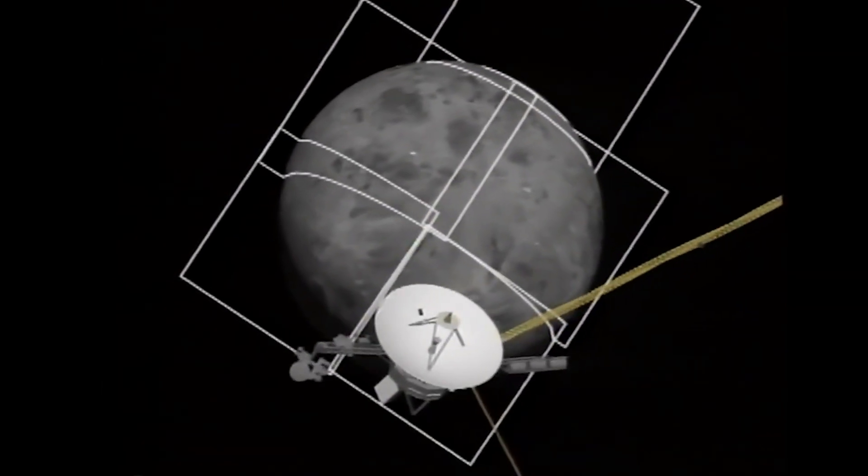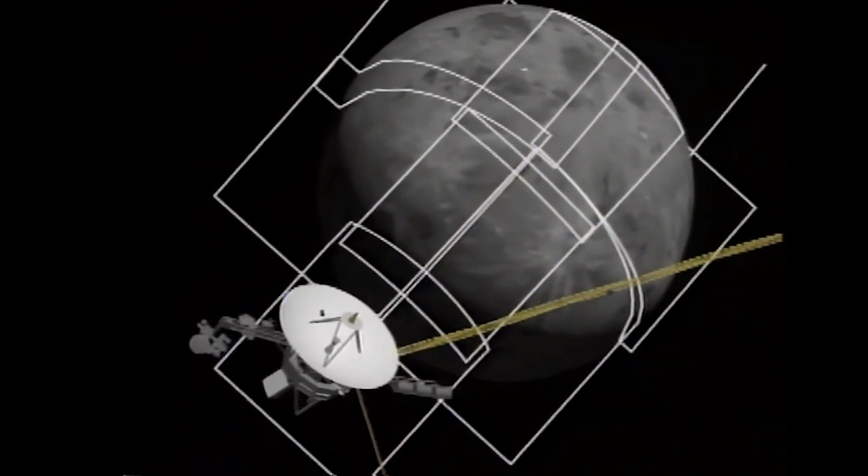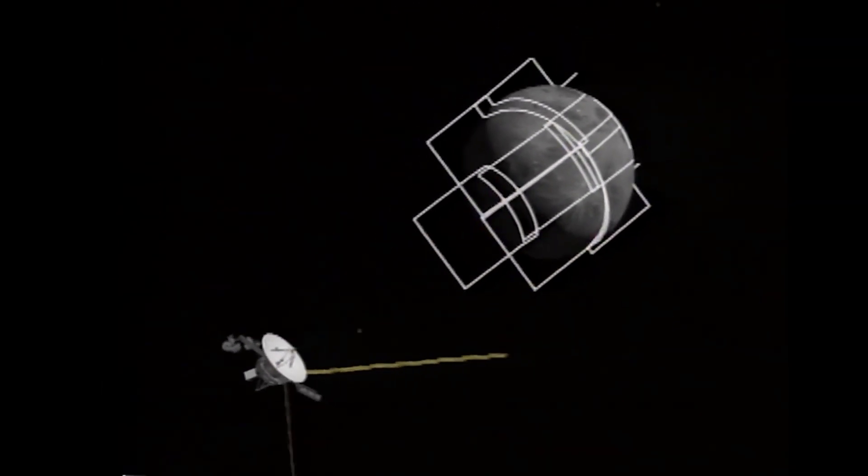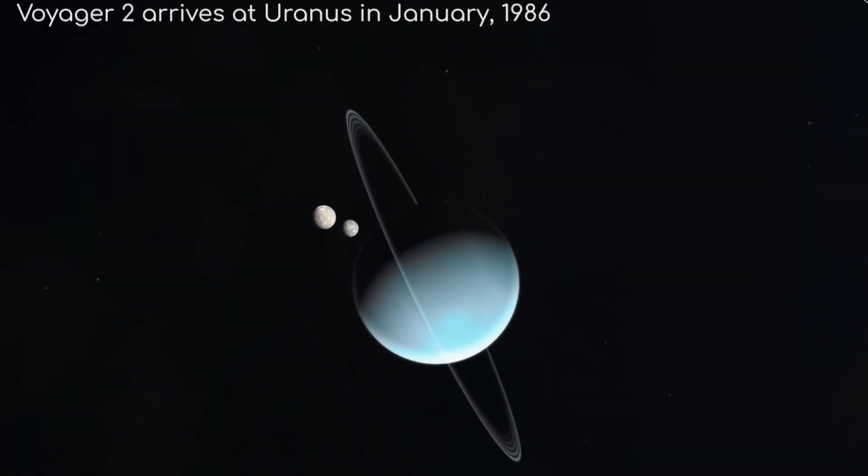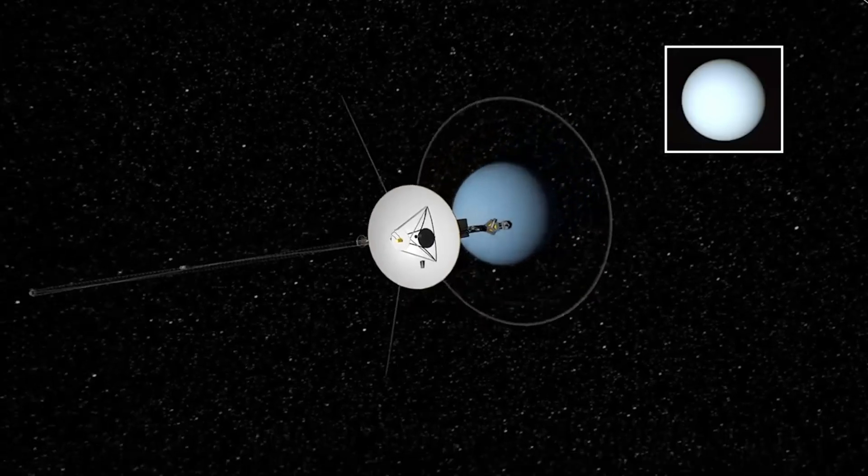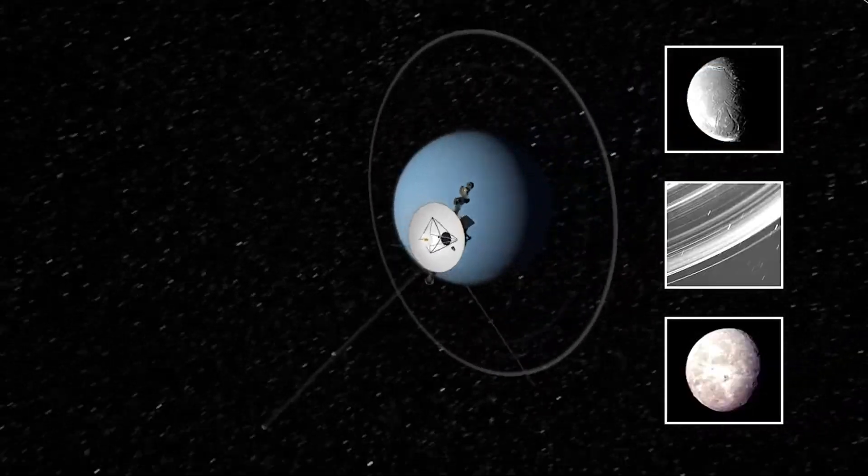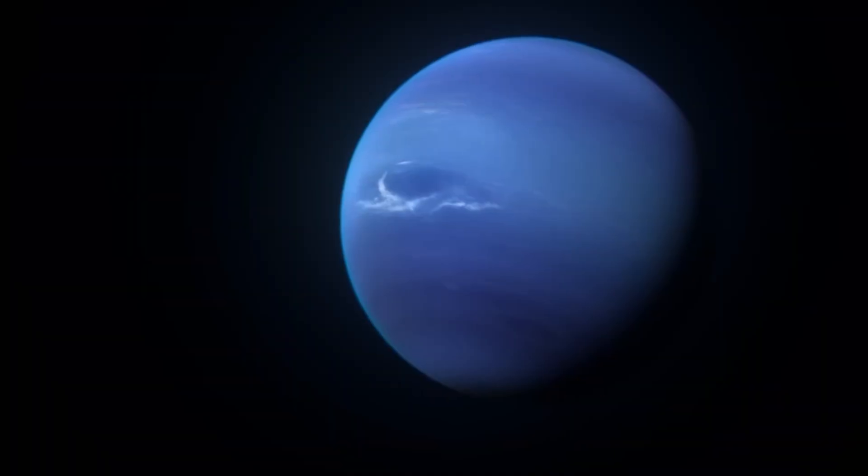From there, Voyager 2 did what no spacecraft had done before or since. It ventured farther, to Uranus and Neptune. Uranus tilted on its side like a rolling ball, with a magnetic field that made no sense, a lopsided, chaotic loop that broke every model.